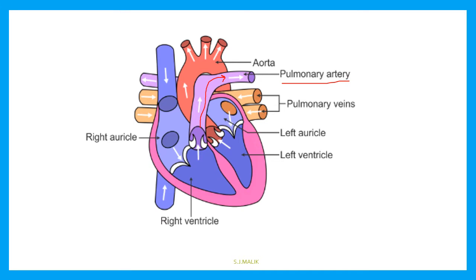This question is asked in one-mark questions many times: which vessel in the human body carries deoxygenated blood to the lungs? On the other hand, the pulmonary vein takes pure blood from the lungs to the heart. Remember these two things — they can be asked in one-mark questions. That is why I kept this diagram in this session. Children sometimes forget: whenever they see the name 'artery' they think it carries pure blood, but here things are opposite — pulmonary artery carries impure blood and pulmonary vein carries pure blood.